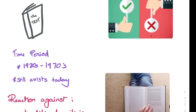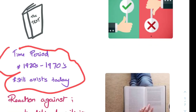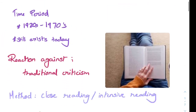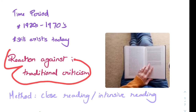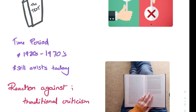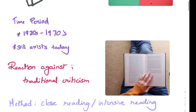The time period in which this idea started was during the 1920s to the 1970s, and it still exists today. It started as a reaction against traditional criticism, because traditional criticism required you to know the author's background. New critics didn't want all that — they just wanted to focus on the text and take it really separately.